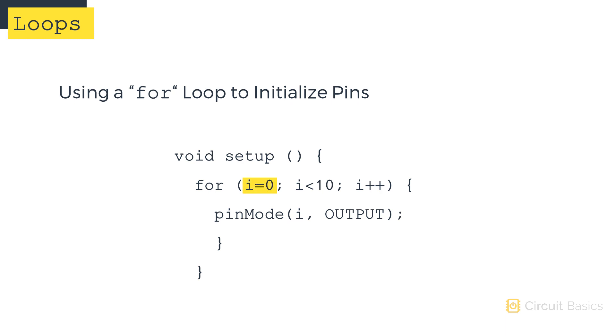Here we declare a loop variable called i and set it equal to zero. The loop control variable holds the loop count, which is going to increase by one each iteration through the loop. Then we set a condition.